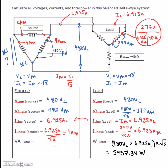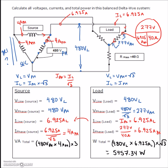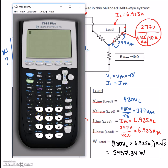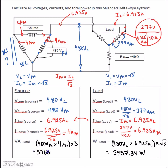We double-check using phase values: V_phase × I_phase × 3 phases = 480V × 4A × 3 = 5,760VA. These values are essentially the same — the small difference is due to rounding errors throughout. We use VA because this is the secondary of the transformer, but it's effectively watts since we have a purely resistive three-phase load.